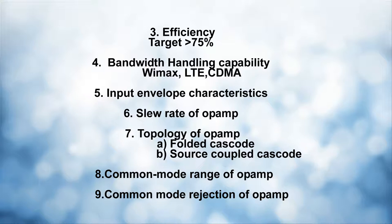Another very important parameter is the slew rate of the op-amp. We are assuming a split-stage envelope tracker here, though even for LDO-based trackers we also have an op-amp. Slew rate is very important and is related in some form to bandwidth, though not in a direct sense.